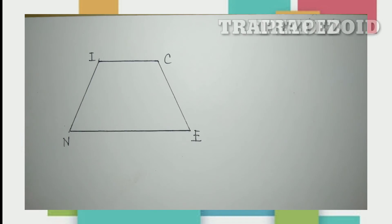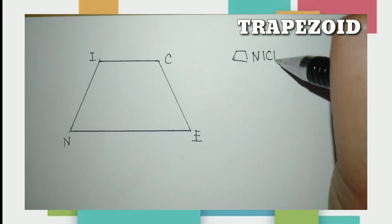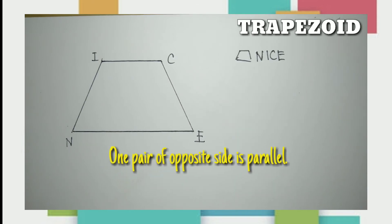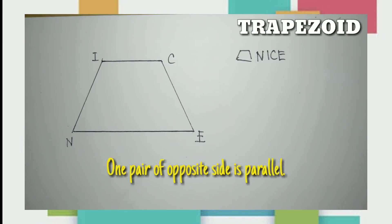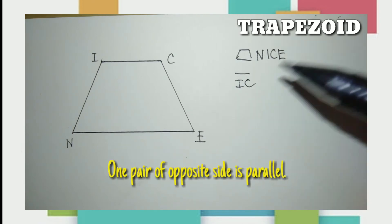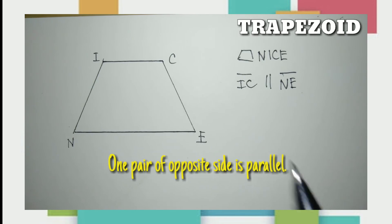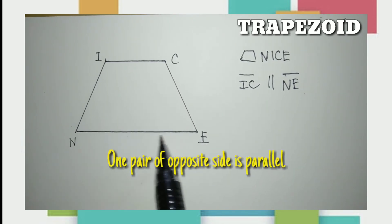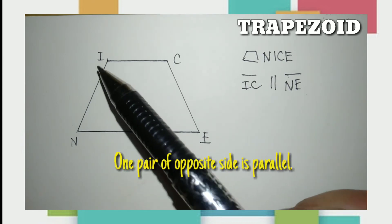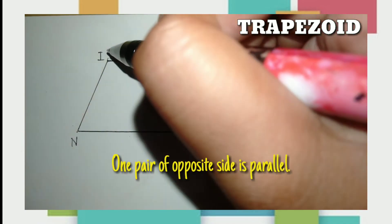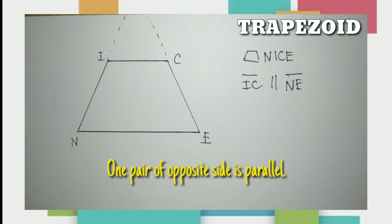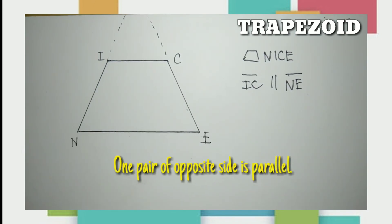We have a trapezoid. It is a type of quadrilateral with one pair of opposite sides that is parallel. Side IC is parallel to side NE. These are the only two parallel sides. As for sides IN and CE, if you extend them in their direction, they would intersect at some point, so they are not parallel. That is how simple a trapezoid is.